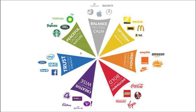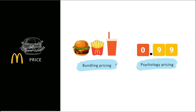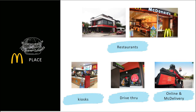For pricing, you need to know strategies like bundling pricing or psychological pricing. Psychological pricing makes a price feel lower — for example, pricing something as 0.99 instead of a full ringgit. Bundling pricing is like a combo where you give a discount, like McDonald's meal bundles. For place, consider where you sell your product — for example, McDonald's has restaurants, online delivery, drive-thrus, and kiosks.